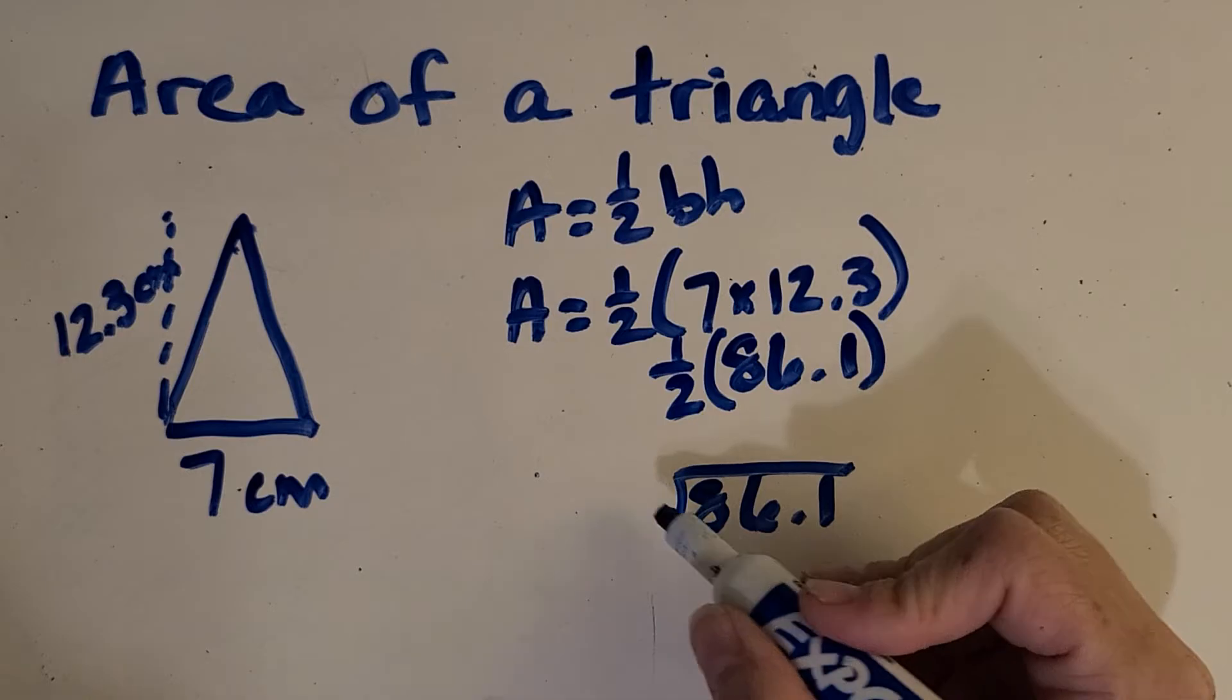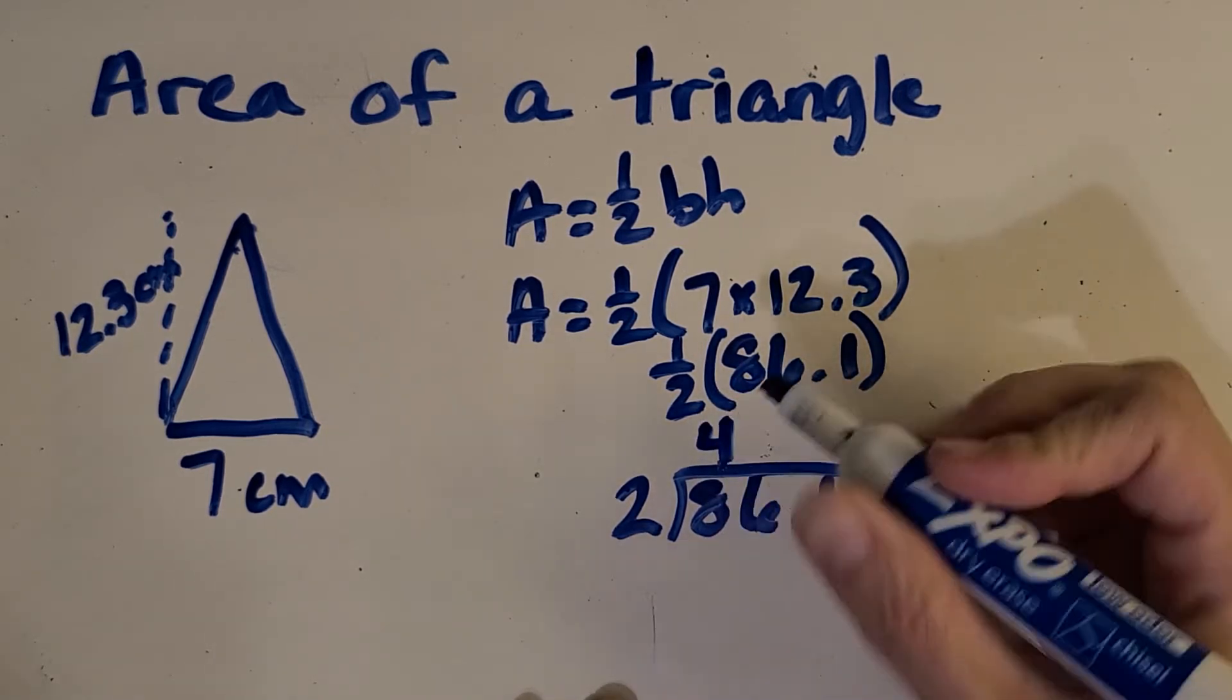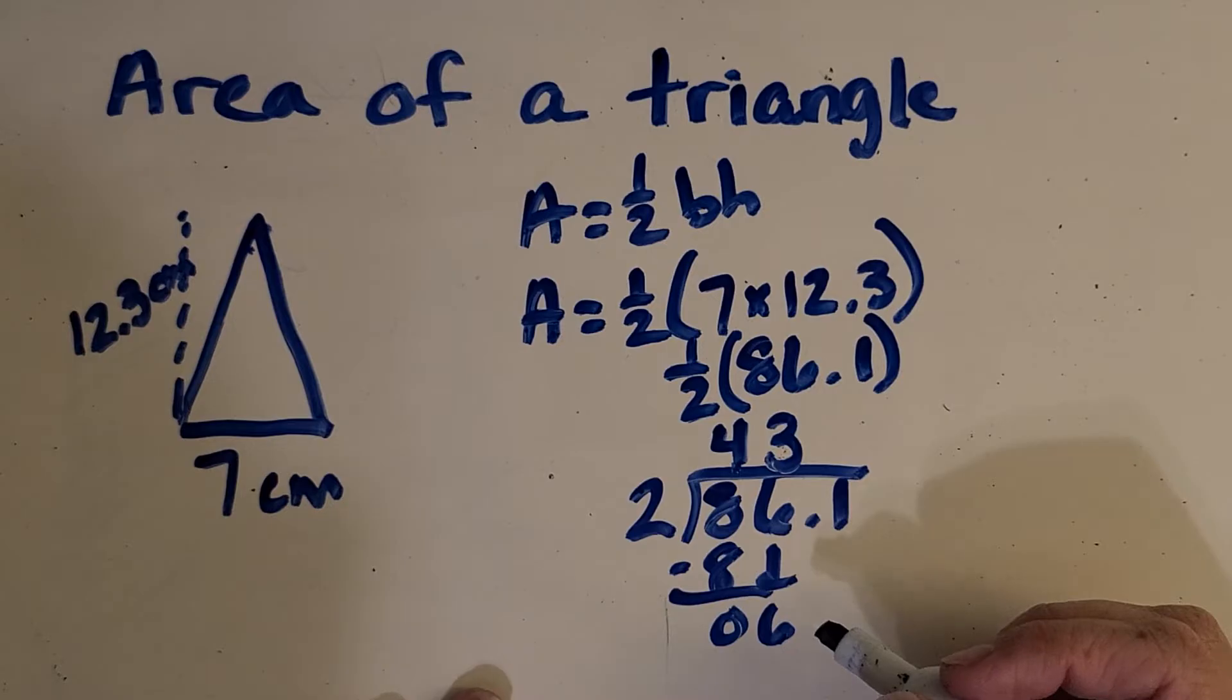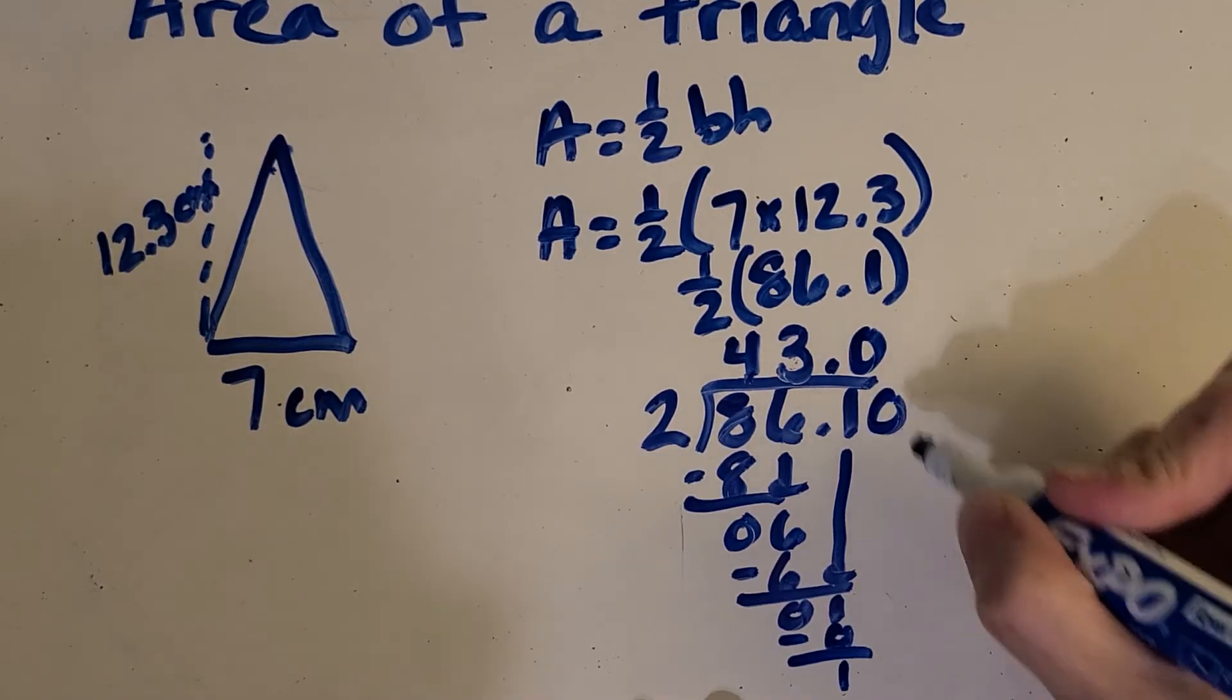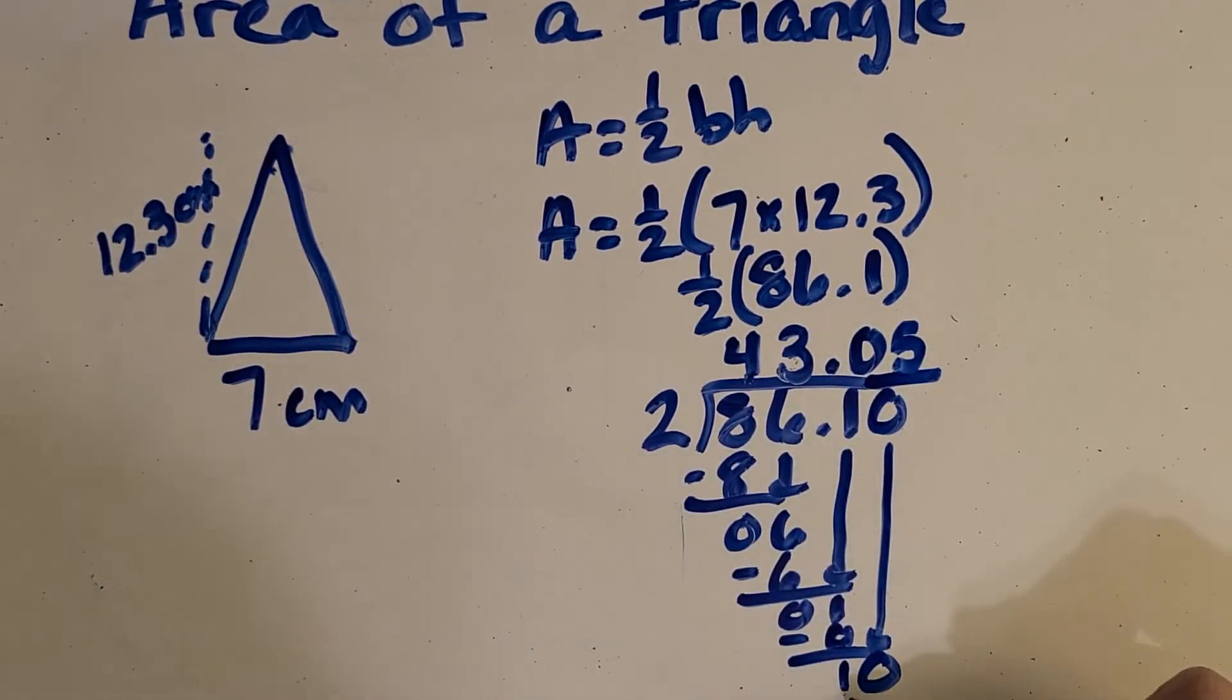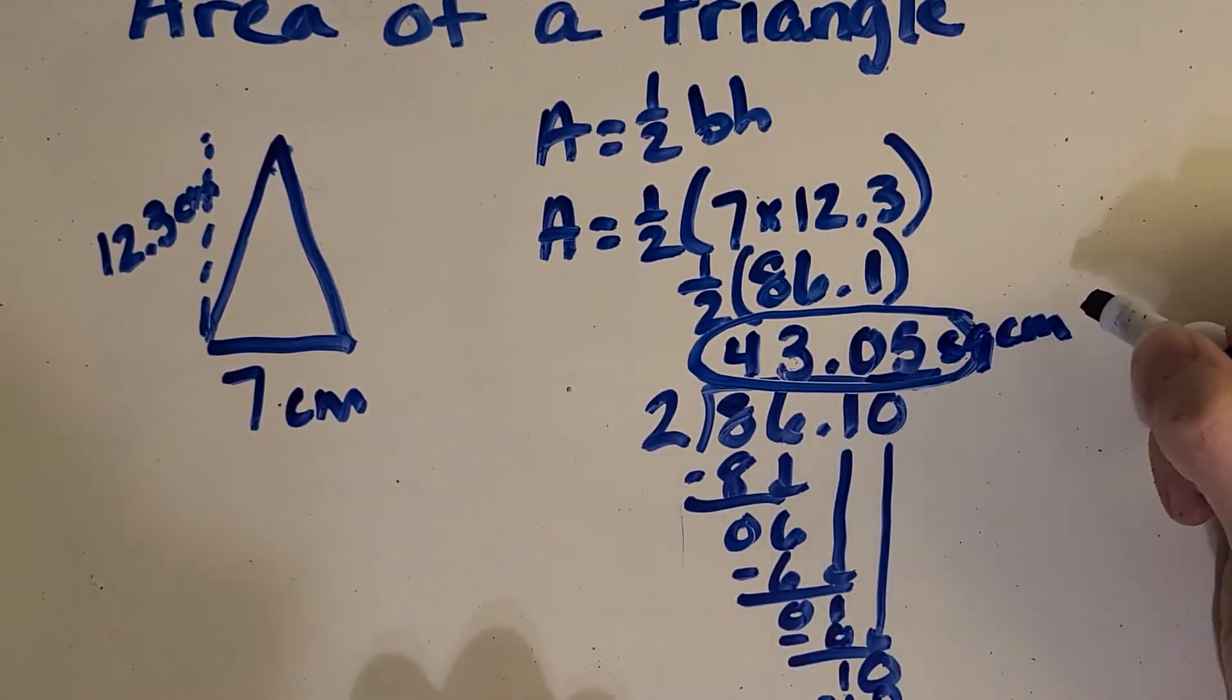I'll do the algorithm down here. So we're going to split it in half. All right, so now we have our area of 43 and five hundredths square centimeters. Great job!